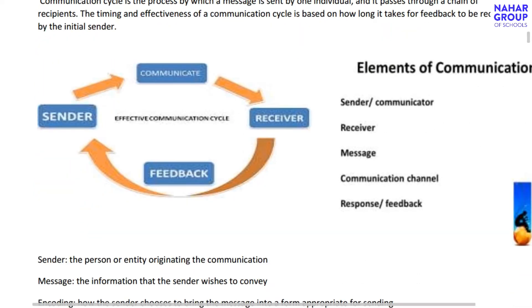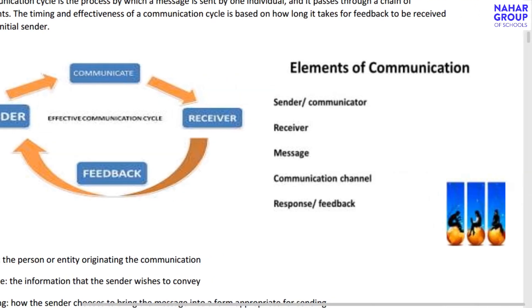You will understand it through this diagram. First, the sender communicates and sends a message to the receiver. The receiver, after getting the message, sends feedback back to the sender. The less time this process takes, the more efficient and effective the communication is. This is the effective communication cycle.